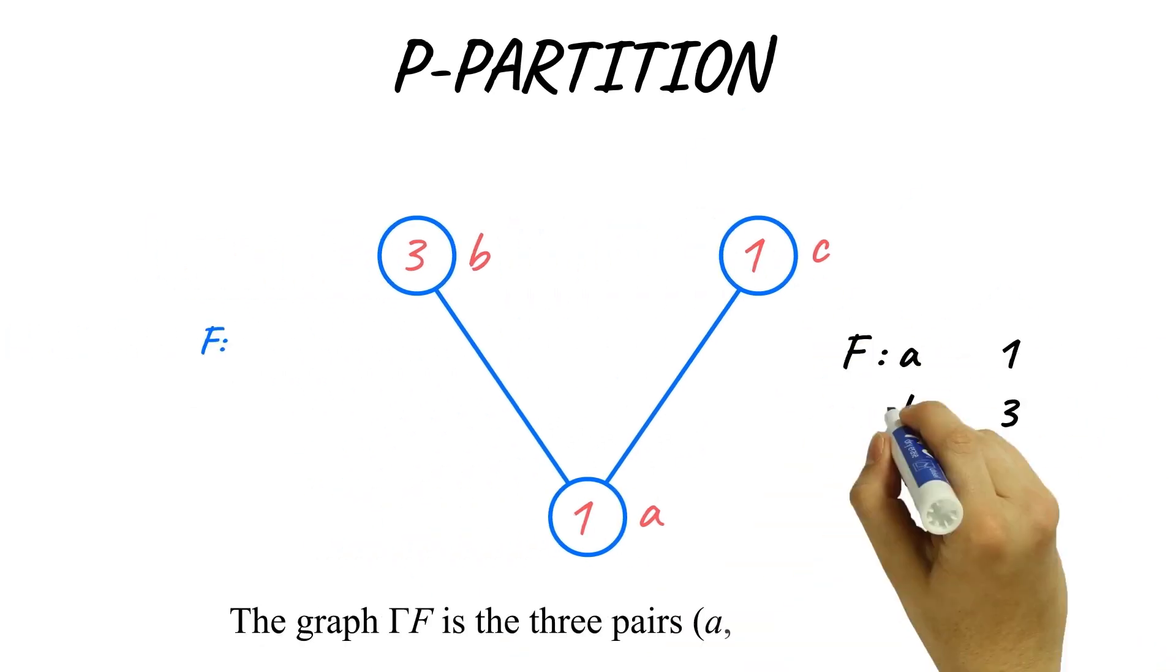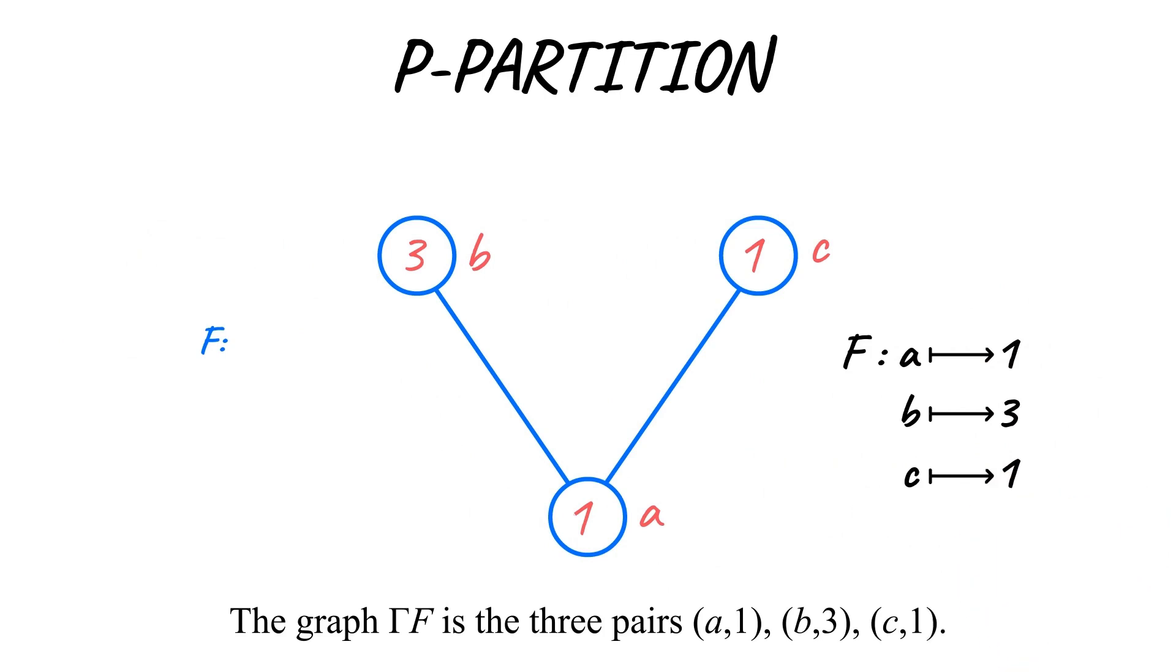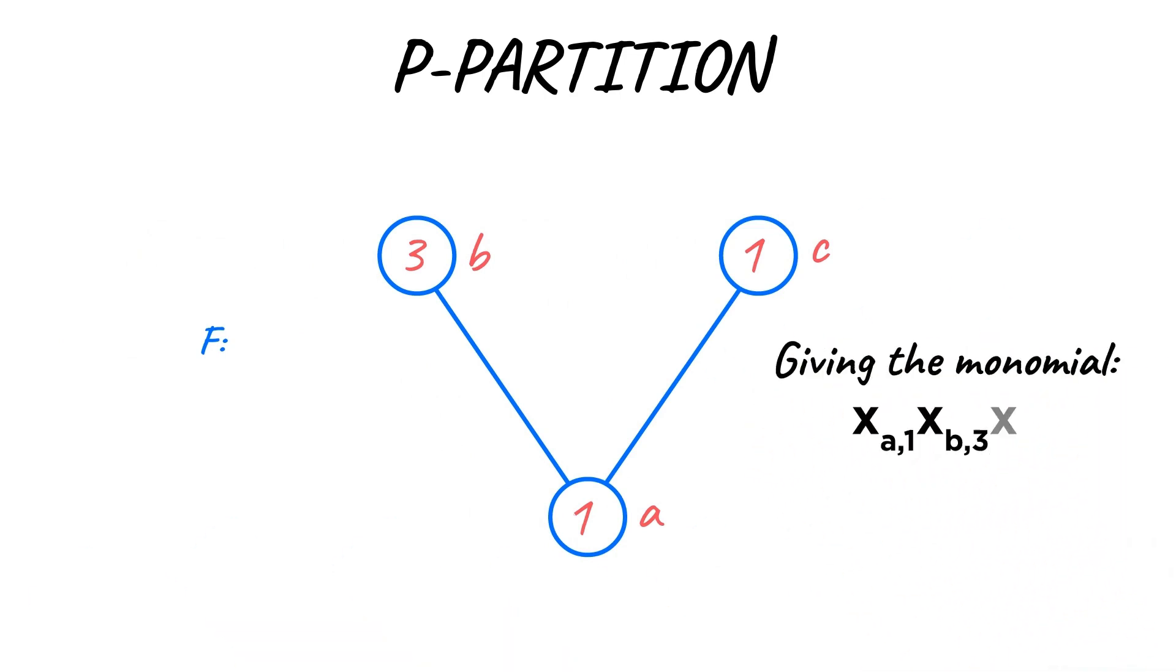We get three pairs: A1, B3, and C1. We get variables making a monomial.